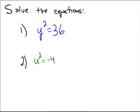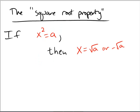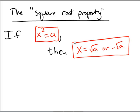As a reminder, the square root property says that if x squared is equal to a, then x is equal to radical a or negative radical a.